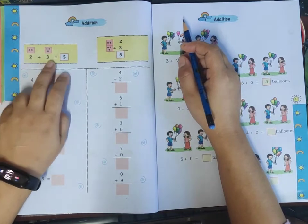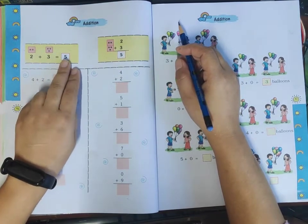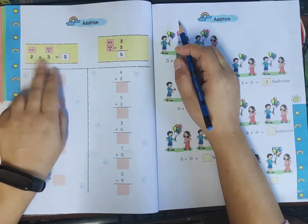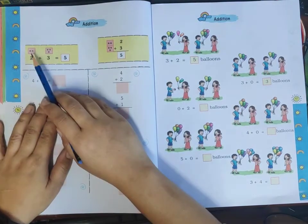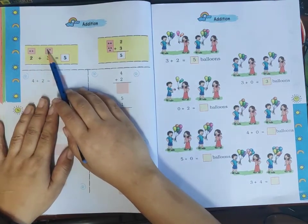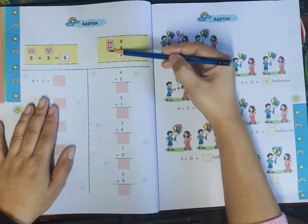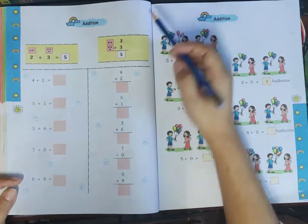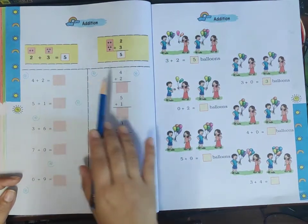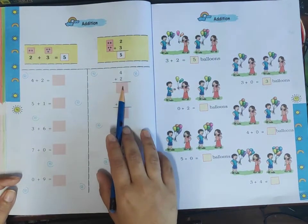In this lesson, we will learn addition. I will explain step by step. First, look at these dots. When we add numbers, we count all the dots together. Let me show you the first question.